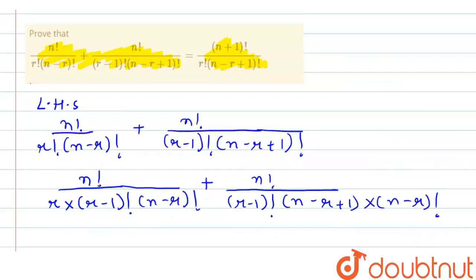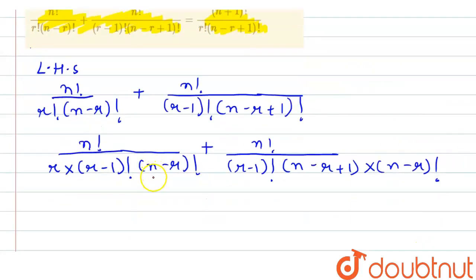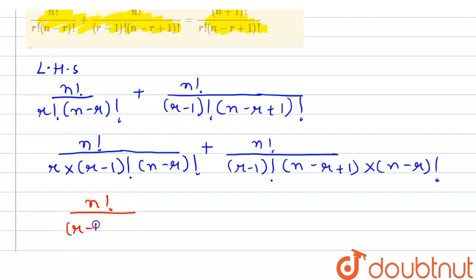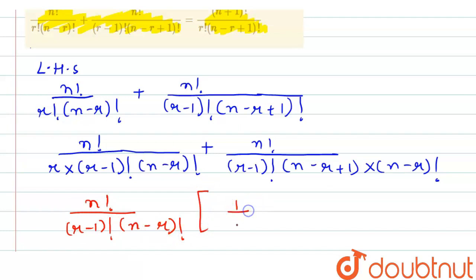Now, from here, take N factorial by R minus 1 factorial into N minus R factorial as common. Then in the bracket we get 1 by R plus 1 by N minus R plus 1.